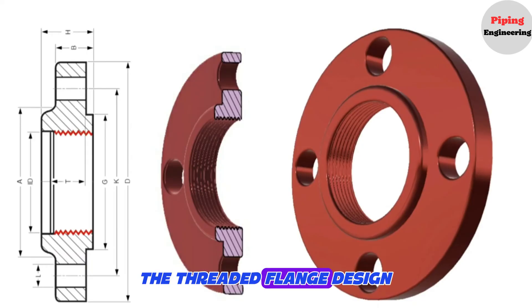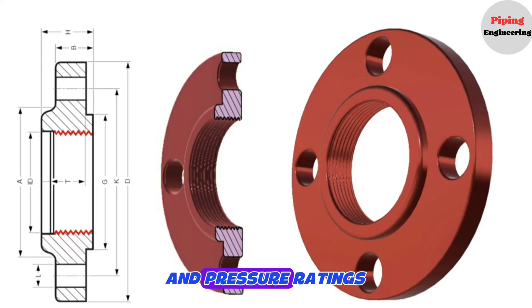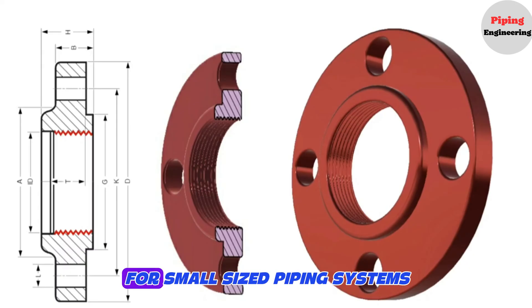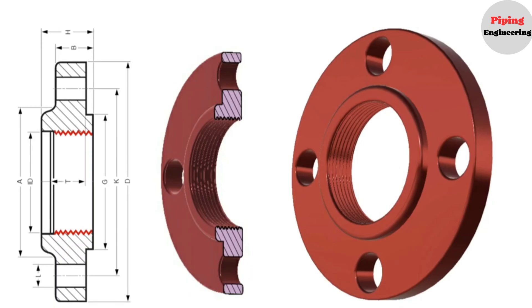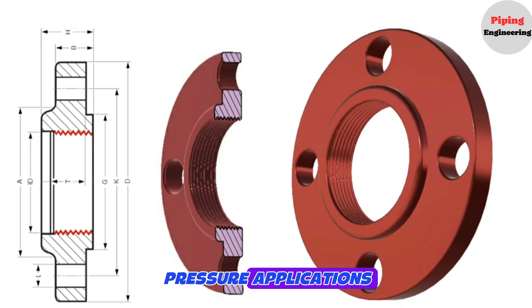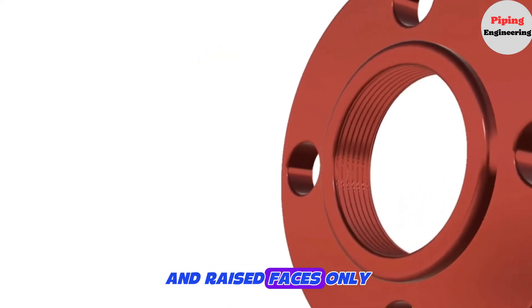Even though the threaded flange design is available in many sizes and pressure ratings, it is mainly used for small-sized piping systems, i.e. less than or equal to 4 inches. Due to their lower pressure applications, threaded flanges use flat and raised faces only.